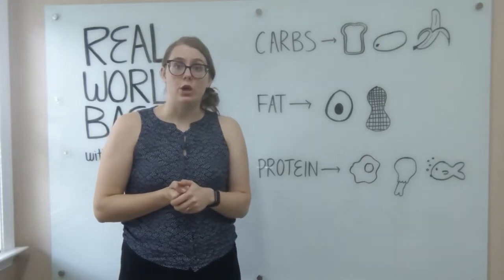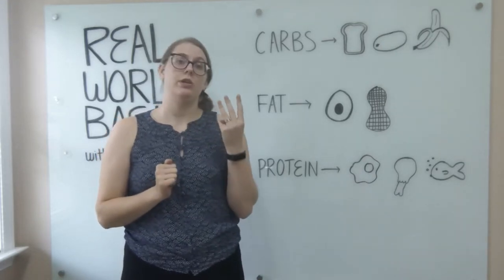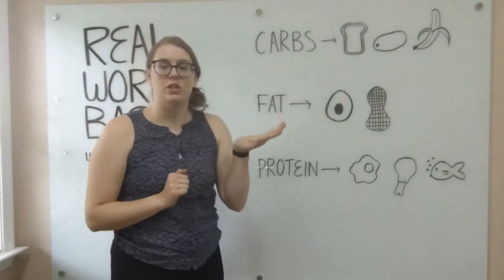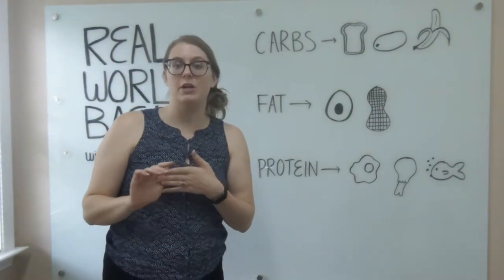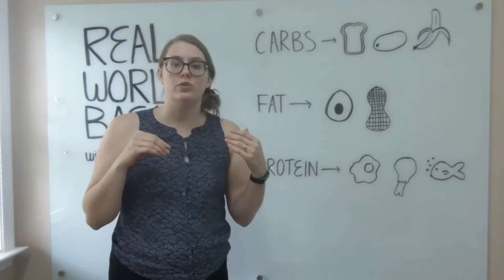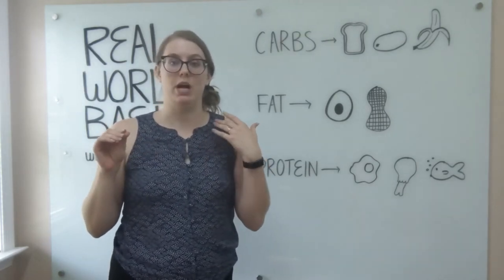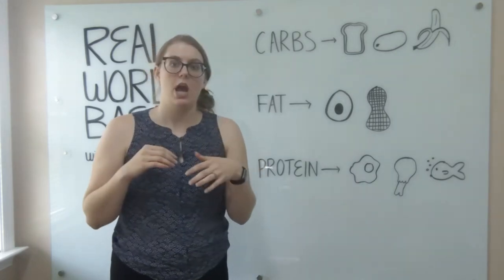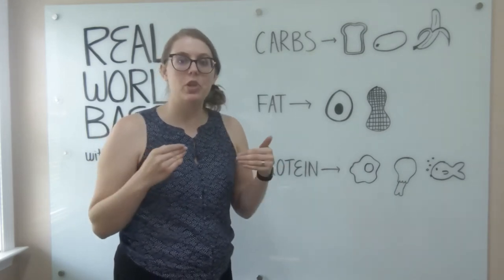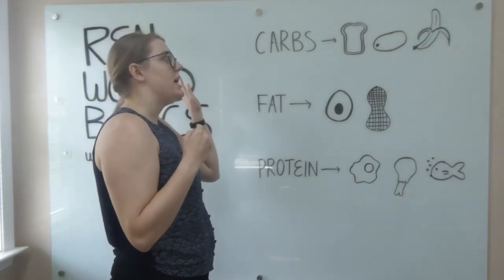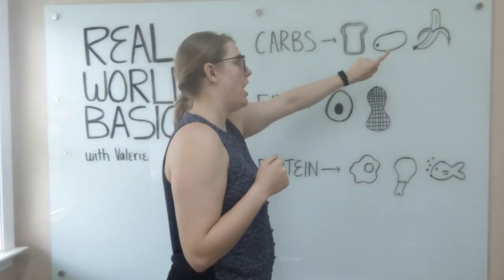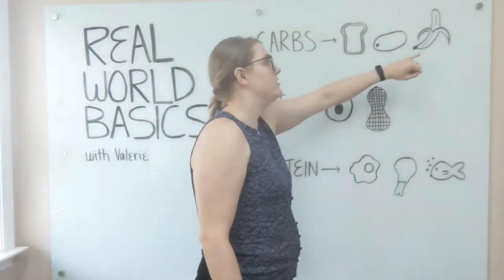But we're going to move on to macronutrients. So macronutrients are broken down into three main categories. You've got carbohydrates, fats, and then protein. Carbohydrates are going to be your sugars, your starches, and fibers. And most types of carbs are then broken down into glucose or sugar, your blood sugar, which your body then uses for energy. Or then it will store it, usually as fat deposits on your body. So carbohydrates are found in a variety of different foods. Your grains - this is a piece of bread if you can't tell. This is also a potato, so starchy vegetables are going to have lots of carbs in them, as well as fruits.